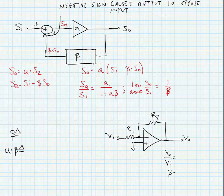We have a few things to look at here. Beta is defined as the feedback factor. This is how much of the signal we send back to the input from the output.